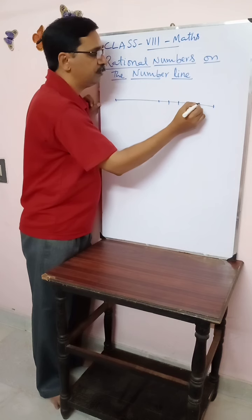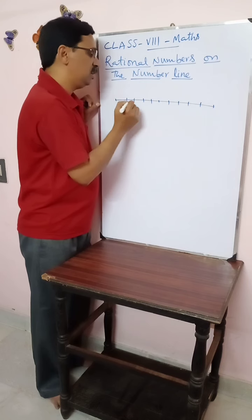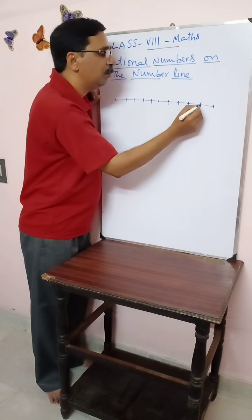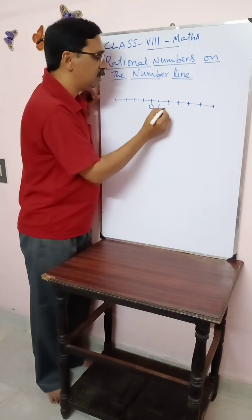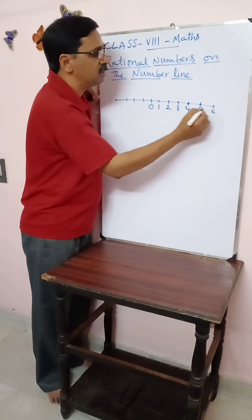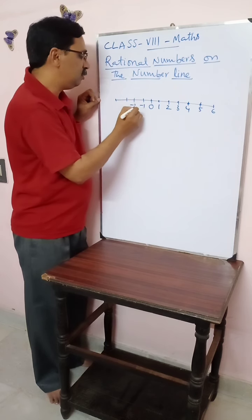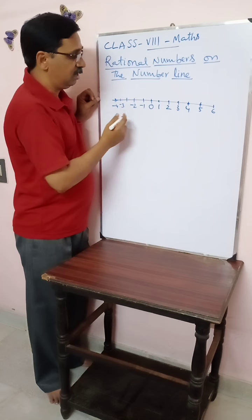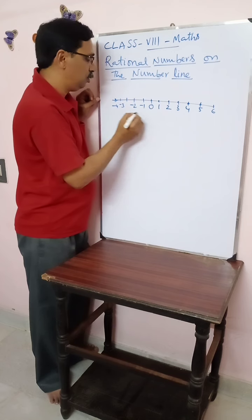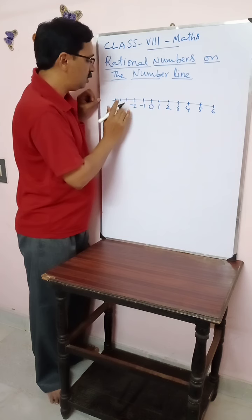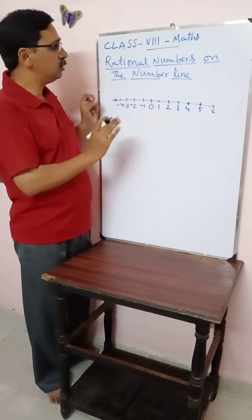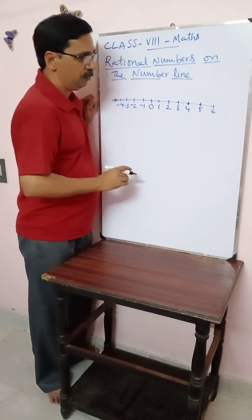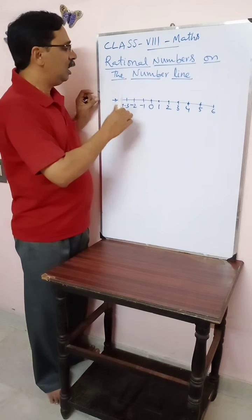We will take unit distances first. These unit distances represent each point — each dot or point represents a number. If you start with zero, this is one, two, three, four, five, six, and towards the left: minus one, minus two, minus three, minus four. Towards the left of zero you have negative numbers and towards the right of zero we have positive numbers. This is the usual notation for representing numbers on the number line up to integers.